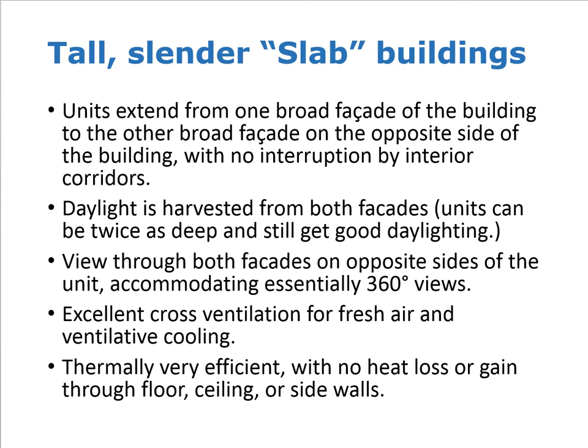As a reminder, we're defining a tall slender slab building as one that is shallow enough that units can extend from one broad facade of the building to the other broad facade on the opposite side of the building with no interruption by interior columns. This allows daylight to be harvested for that unit from both facades, meaning the unit can be twice as deep from a daylighting point of view as a single loaded corridor unit, which is only illuminated from one side.